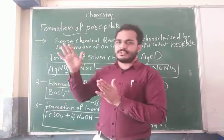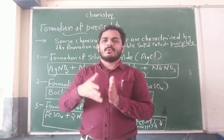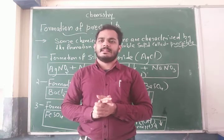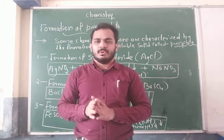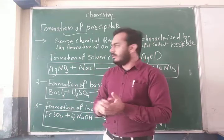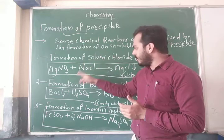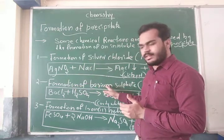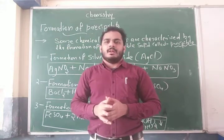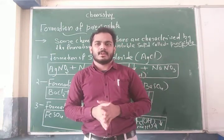This character — the formation of precipitate — means that in some chemical reactions, an insoluble solid substance is produced, called a precipitate. I hope all of you understood these three chemical reactions: formation of silver chloride, formation of barium sulfate, and formation of iron hydroxide. All of you learn clearly. Thank you.